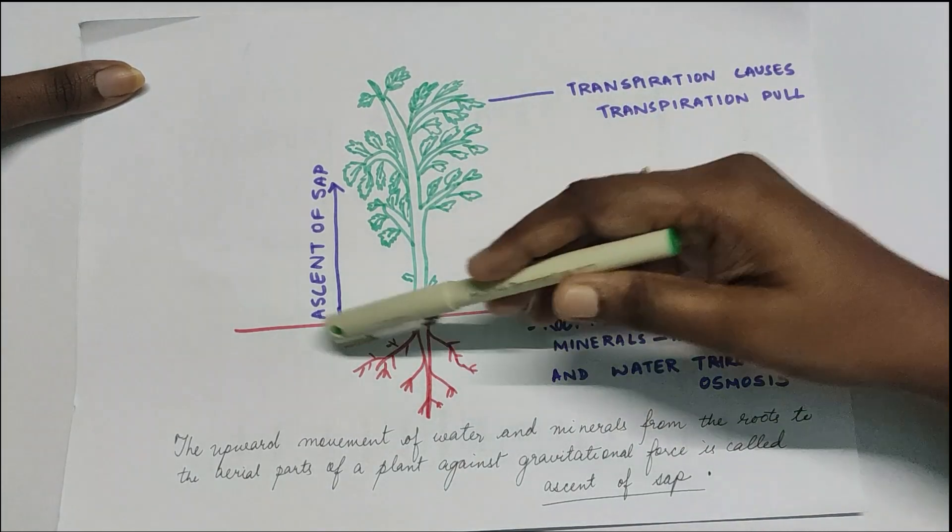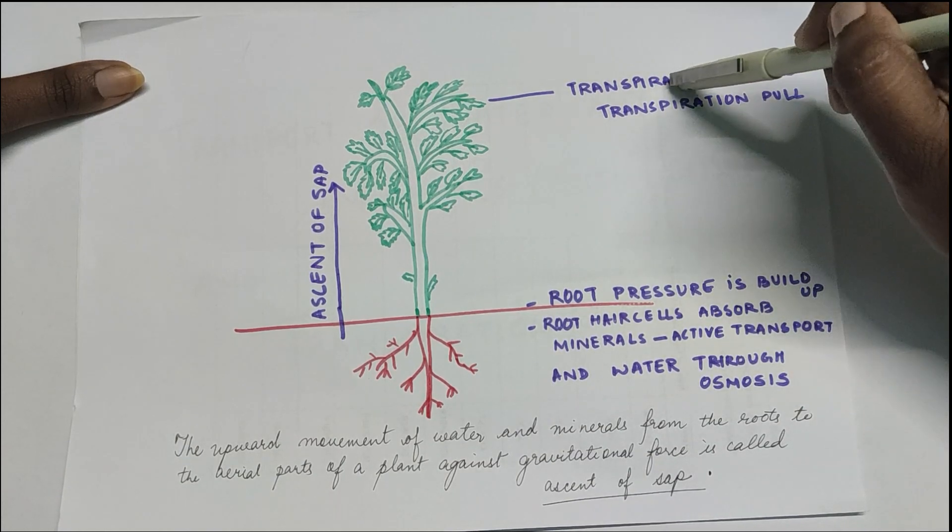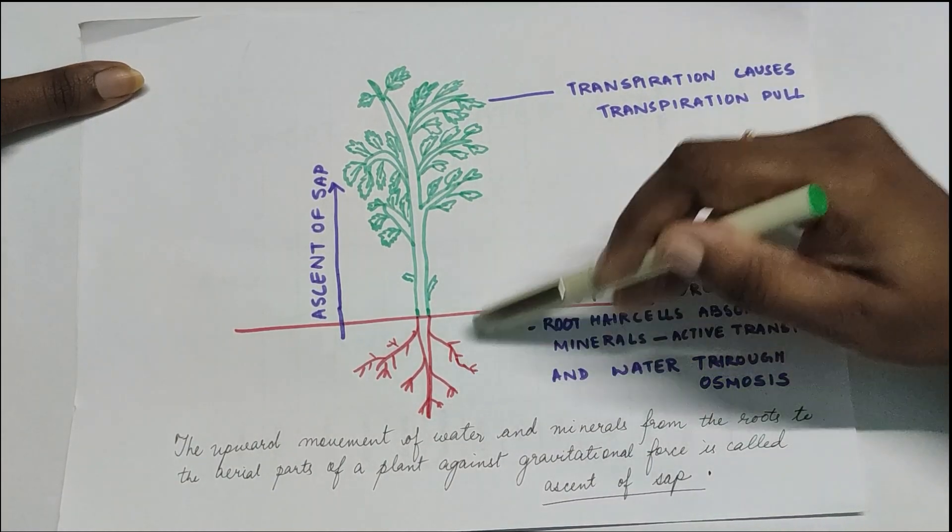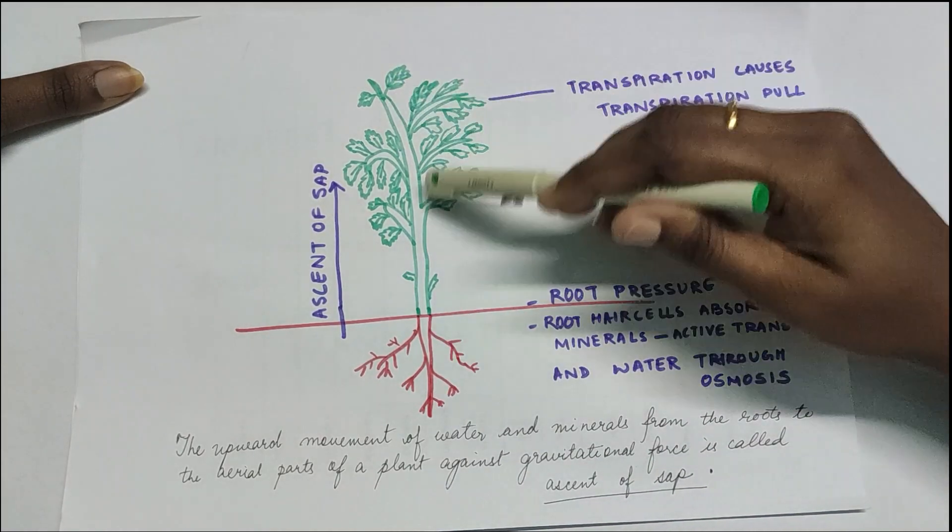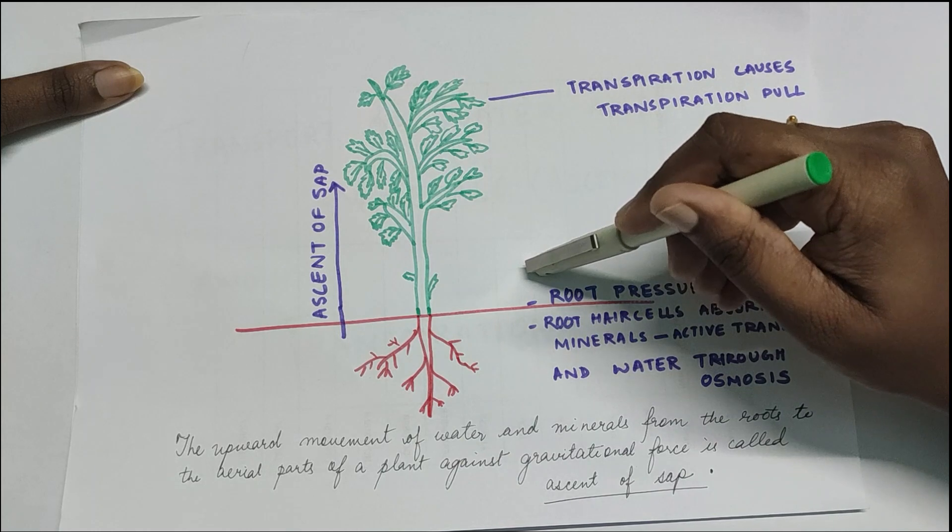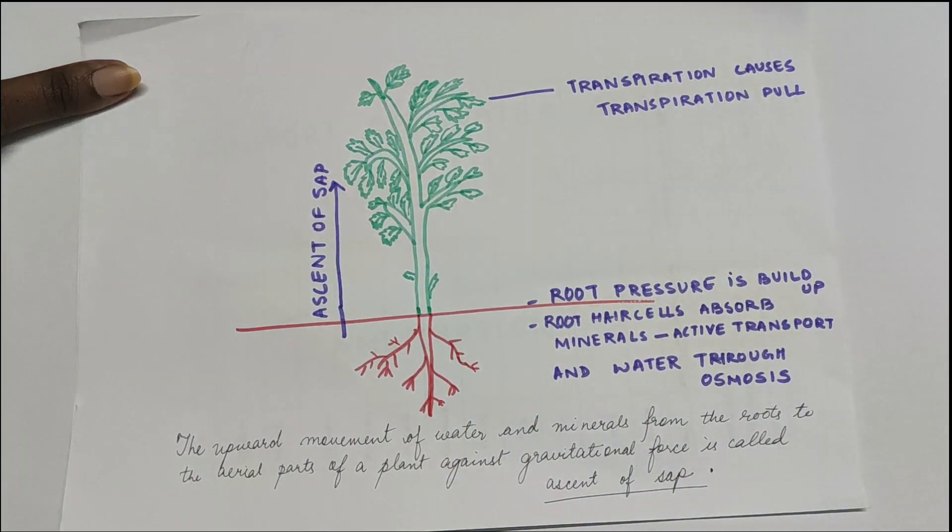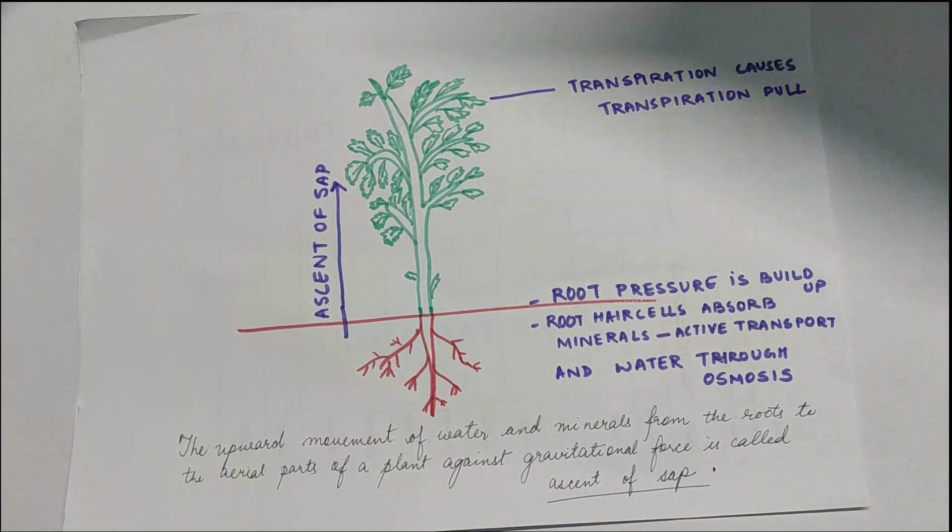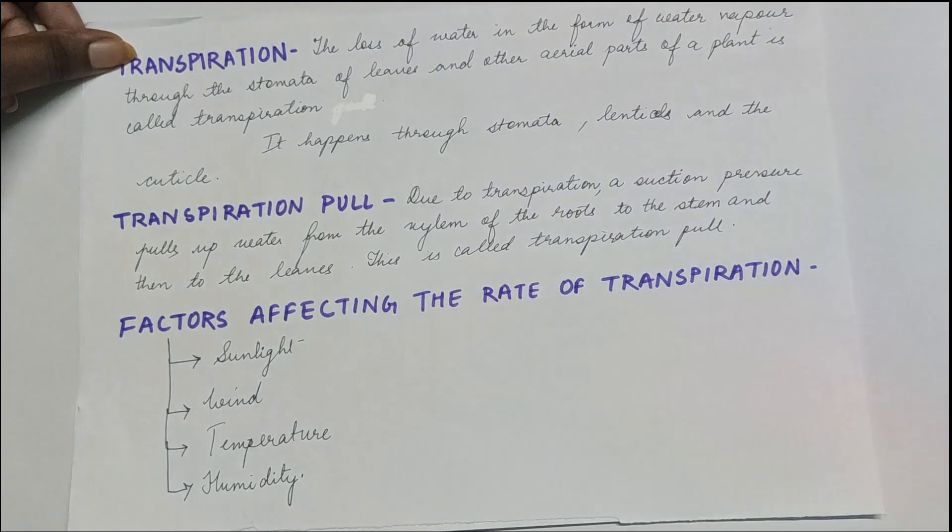Because when the water will be absorbed by the root, it is going to go up because of all this process that we discussed, and then the transpiration is also helping because it is causing the transpiration pull and the water is reaching all the different parts of the plant. So that is why there is a direct relationship between absorption and transpiration pull. Now coming back, we should also know what are the factors in which the rate of transpiration depends.